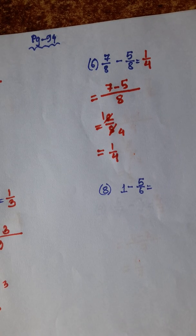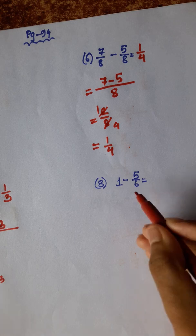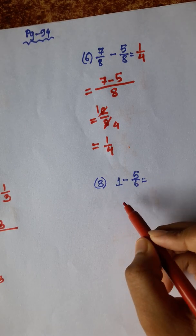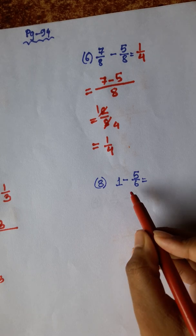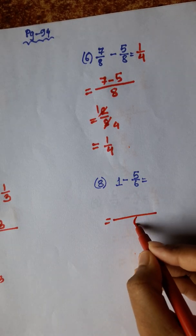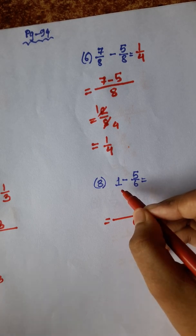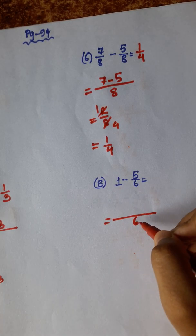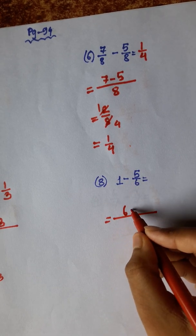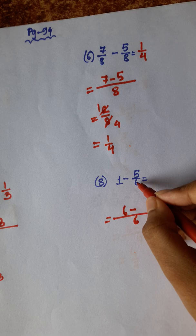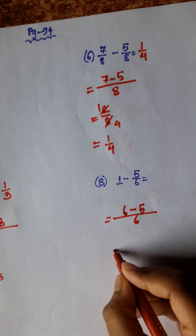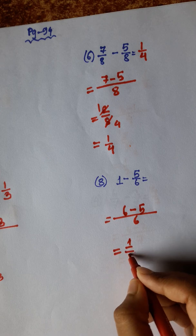Number 9: 1 minus 5 by 6. We convert the whole number 1 into a fraction using LCM 6. 6 divided by 6 into 1 is 6. 5 into 1 is 5. So the answer is 1 by 6.